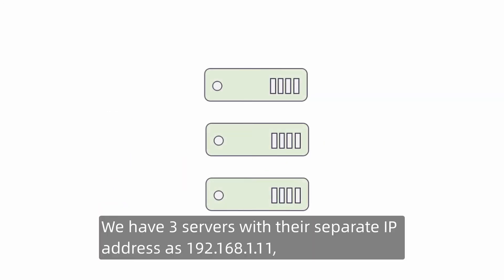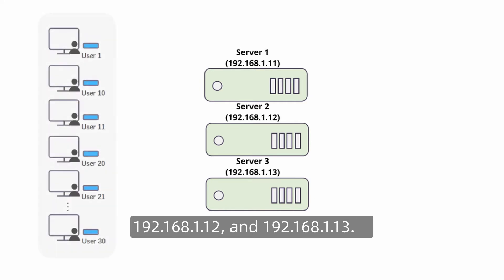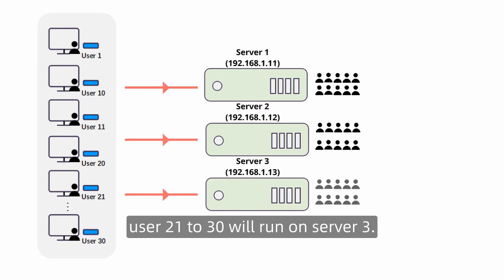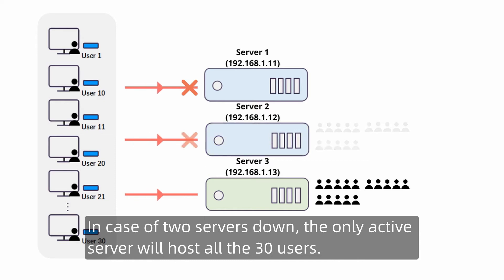We have three servers with IP addresses 192.168.1.11, 192.168.1.12, and 192.168.1.13. Usually, users 1 to 10 will run on server 1, users 11 to 20 will run on server 2, and users 21 to 30 will run on server 3. In case of any single server going down, the other two servers will fairly host 15 users each. In case of two servers down, the only active server will host all 30 users.